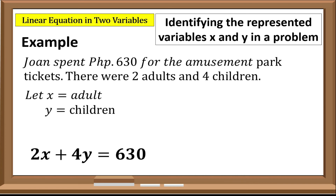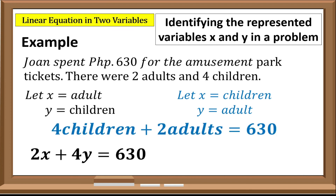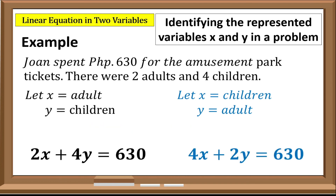The other possible representation is: if we let x represent children and y represent adults, then 4 children plus 2 adults equals 630, giving us the equation 4x plus 2y equals 630.